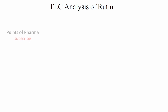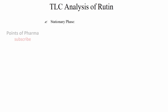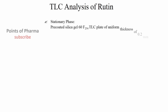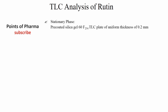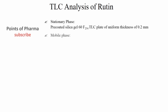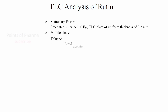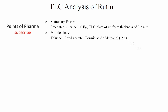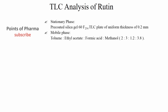TLC analysis of Rutin: The stationary phase consists of pre-coated silica gel 60 F254 TLC plate of thickness 0.2 mm. The mobile phase consists of toluene, ethyl acetate, formic acid, and methanol in the ratio 2:3:1.3:3.8.